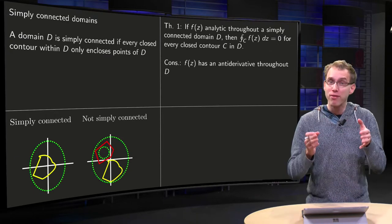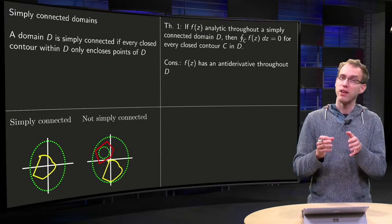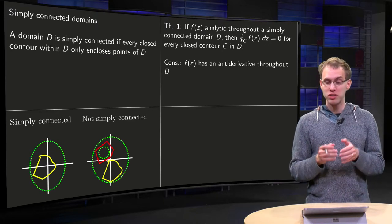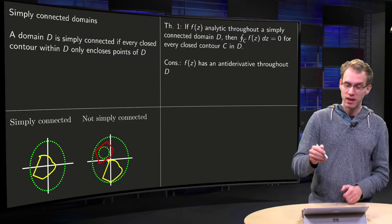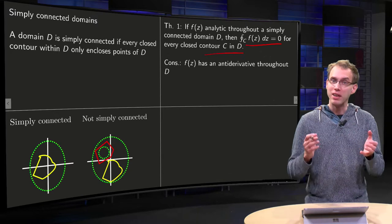Now, if your region is simply connected, then we are happy, because we have a theorem one. If f is analytic throughout a simply connected domain D, then this integral is zero for every closed contour c in D. And why is that?